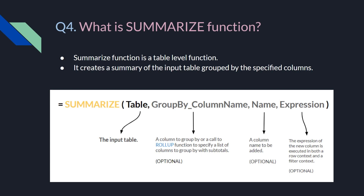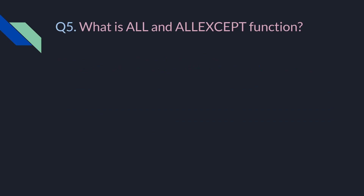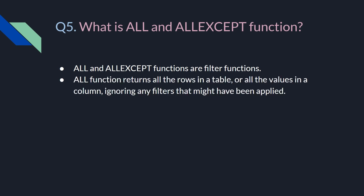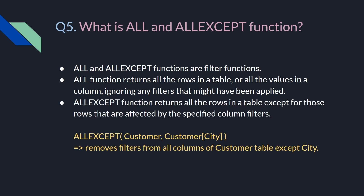The fifth question is: what is the ALL and ALLEXCEPT function? This is also a very important question. ALL and ALLEXCEPT are filter functions. The ALL function returns all the rows in a table or all the values in a column, ignoring any filters that might have been applied. The ALLEXCEPT function returns all the rows in a table except those rows that are affected by the specified column filters — for example, removing filters from all columns of the customer table except the city column.